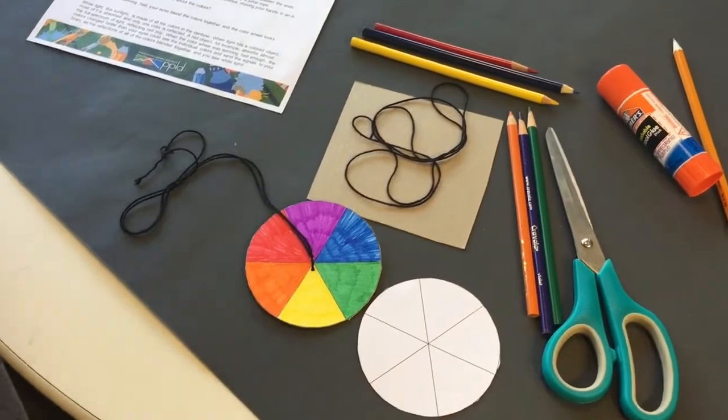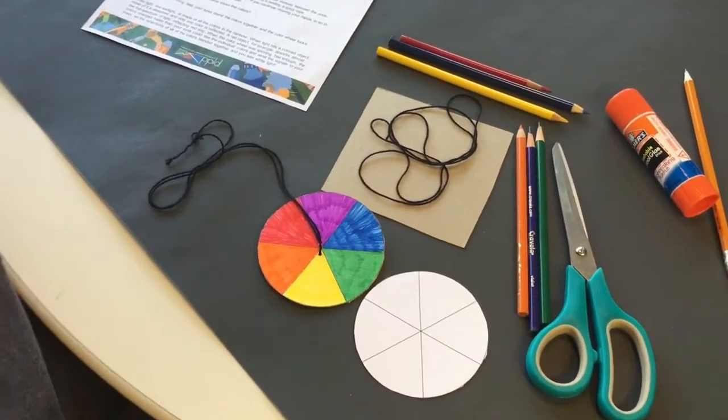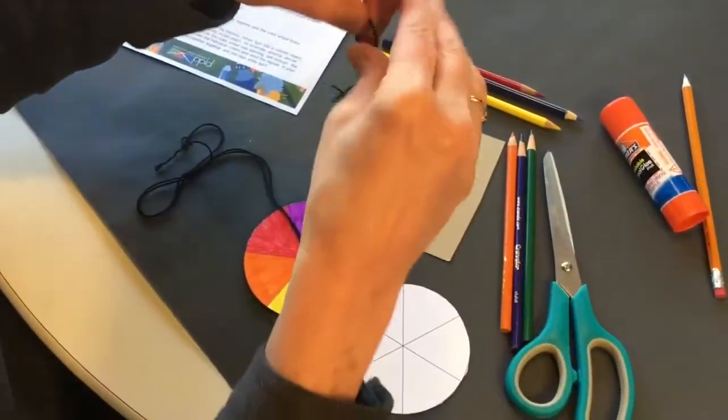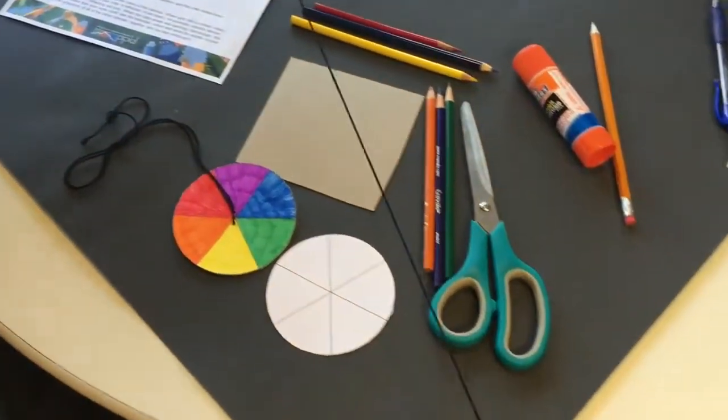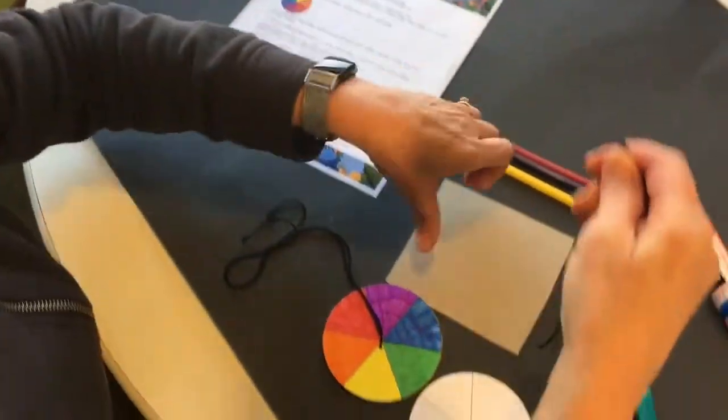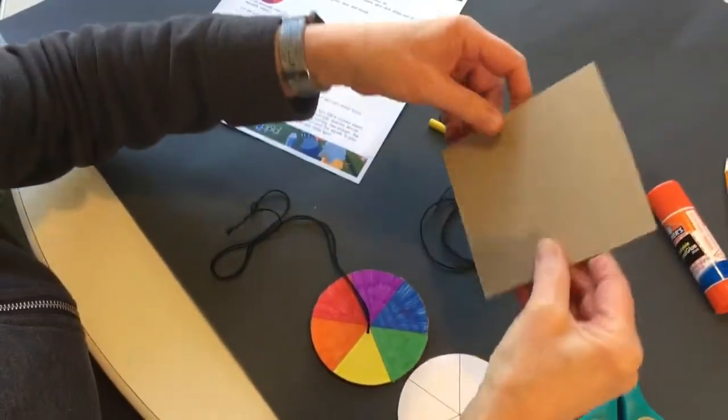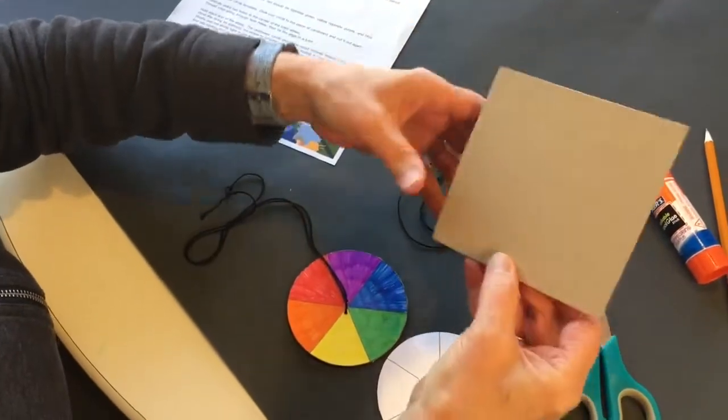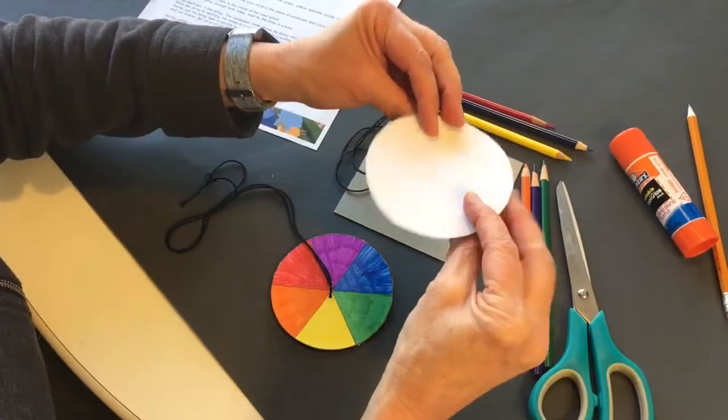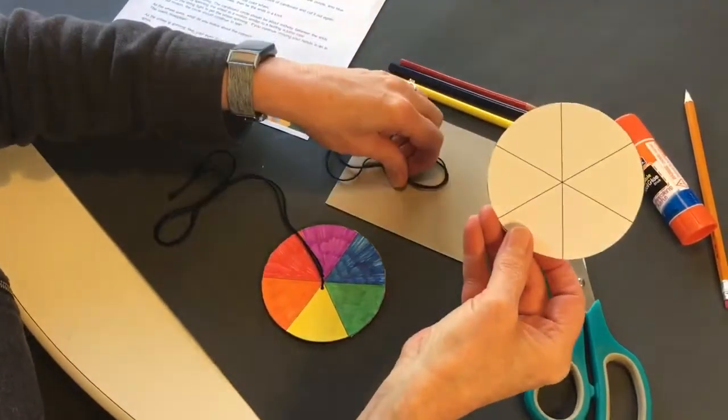The supplies that will be in your take and make starting March 12th are a piece of string, and this string is 36 inches long, so it's pretty long, and you'll get a piece of cardboard and a circle template of a color wheel.